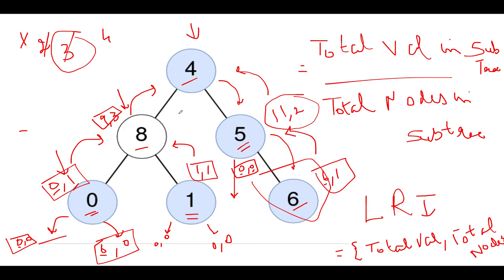Back at the root node 4, from the left subtree we have (9, 3) and from the right subtree we have (11, 2). The total sum is nine plus four plus eleven = twenty-four, and total nodes = three plus two plus one = five. Twenty-four divided by five equals four, which matches the node value, so the count updates to five and we are done with the traversal. The time complexity of this approach is O(n).